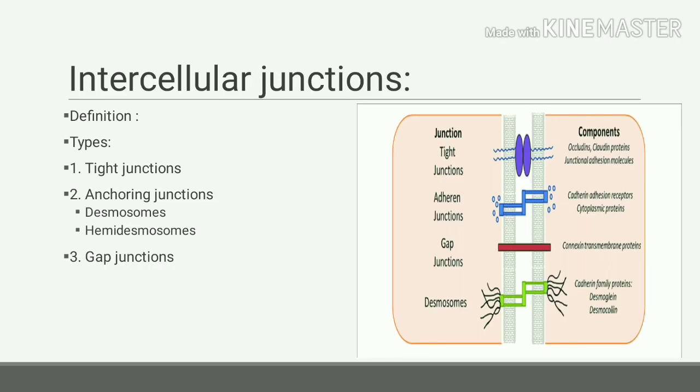Hello friends, today we will discuss intercellular junctions. When cell membranes of neighboring cells are connected with each other by various junctions, they are known as intercellular junctions or junctional complexes. They are mainly of three types: